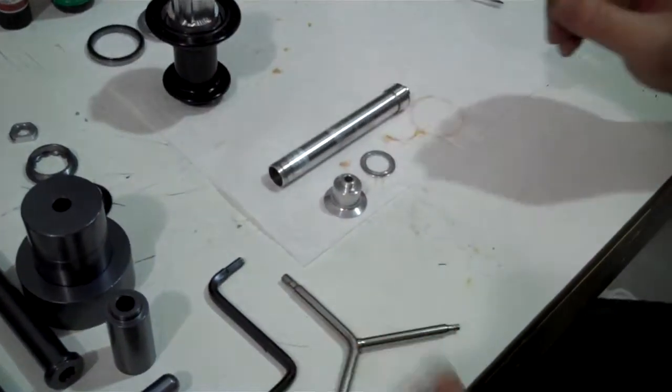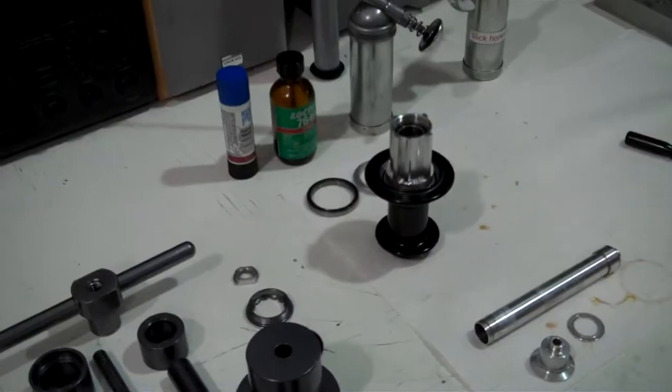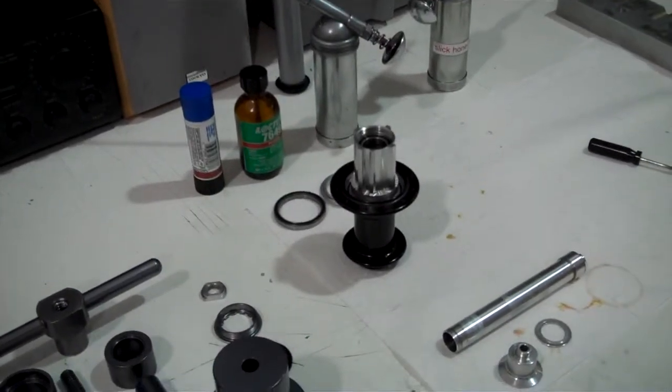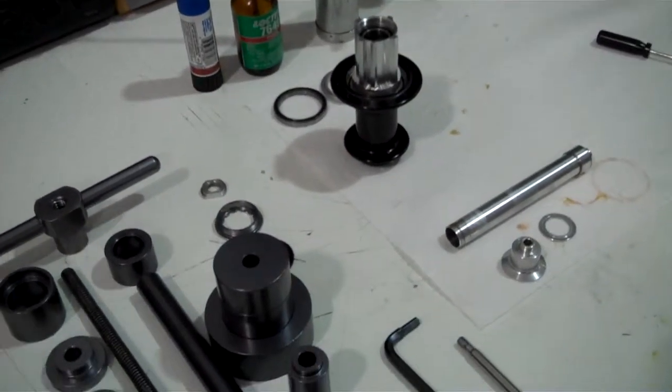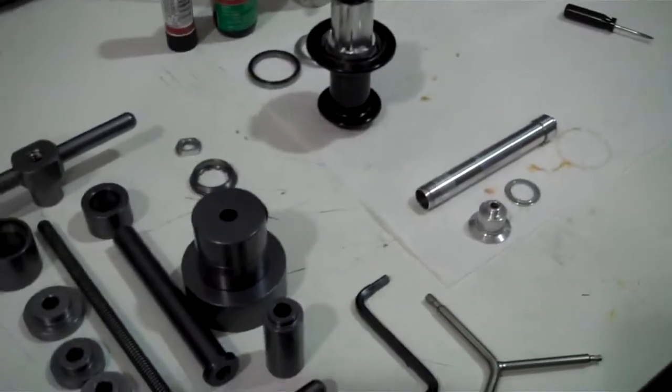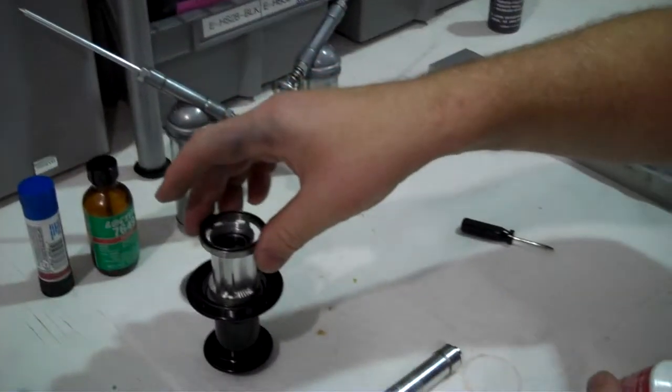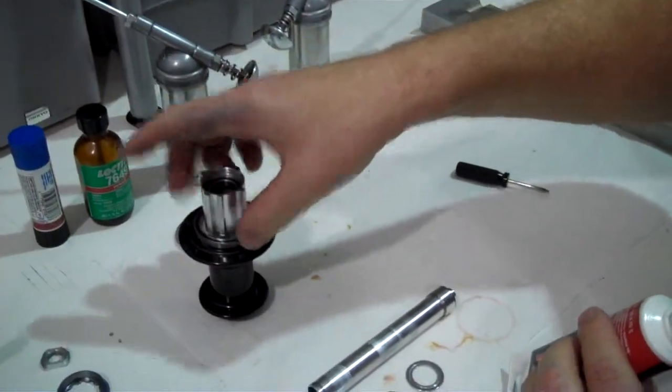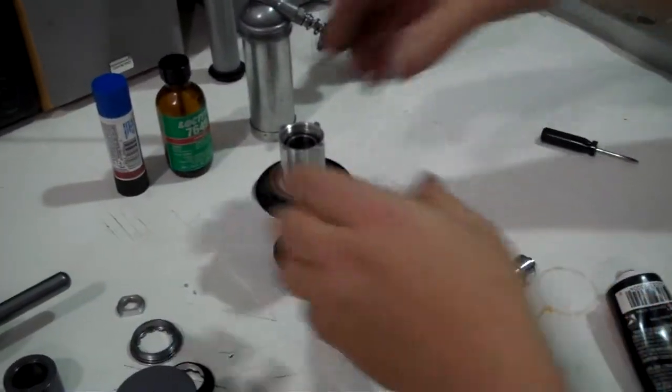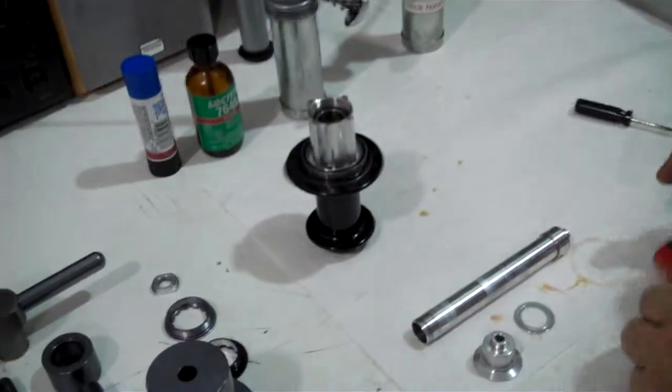All right, and the next thing we're going to do then is we're going to install the main cassette body bearing. That's this bearing right here, 6707. You can just literally drop that over the cassette body like that.